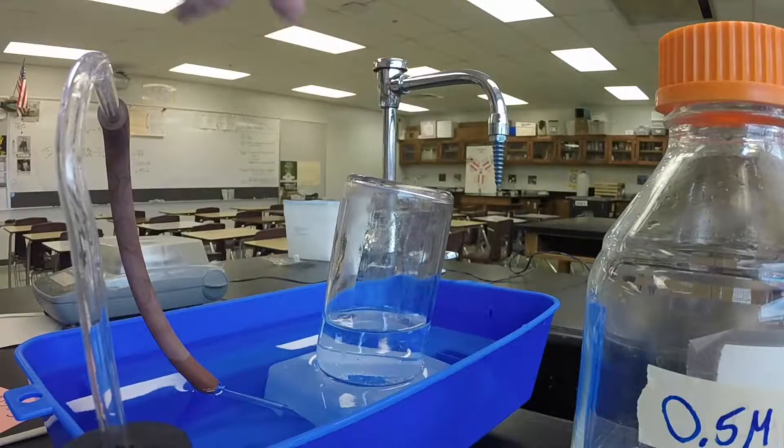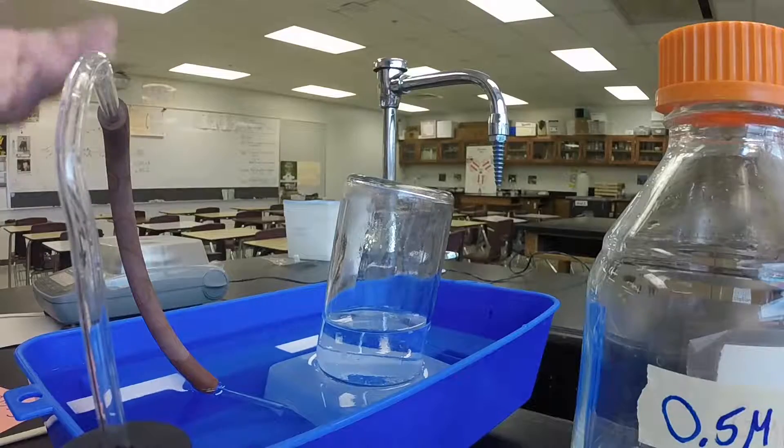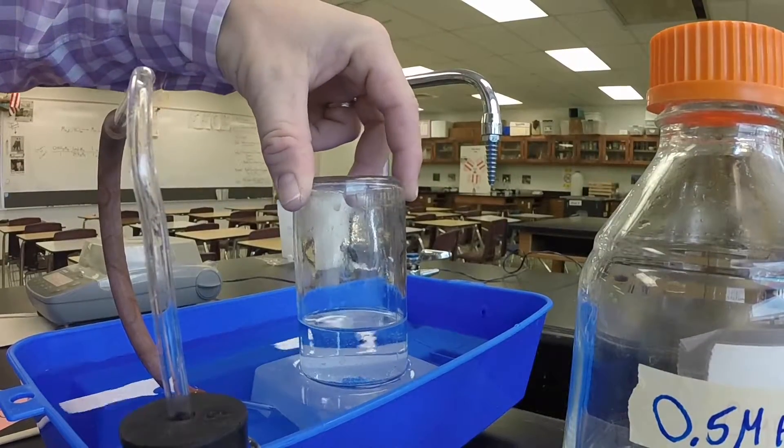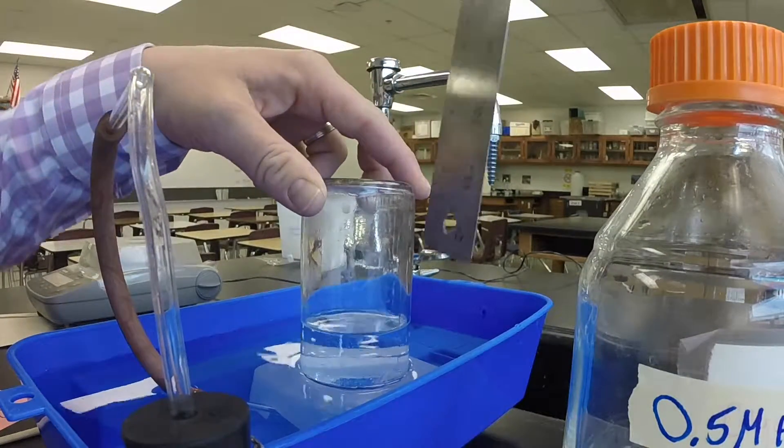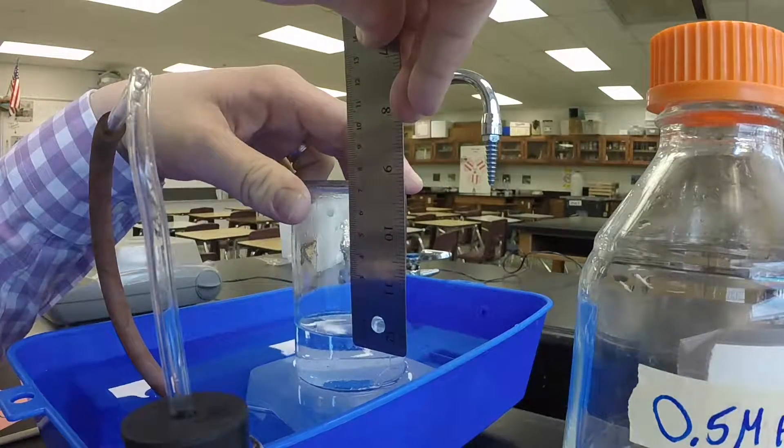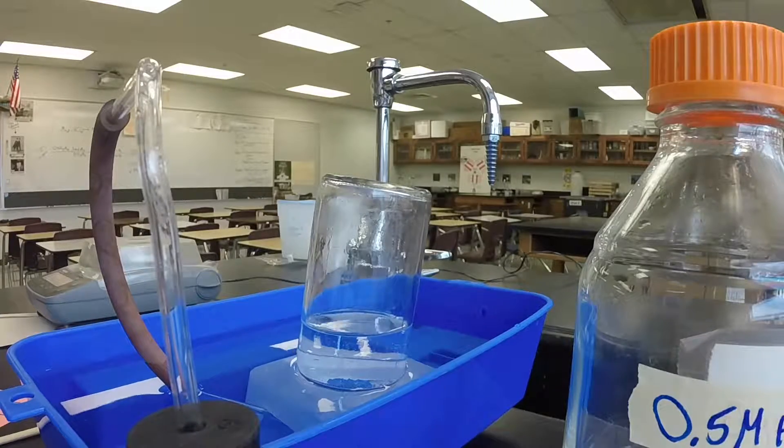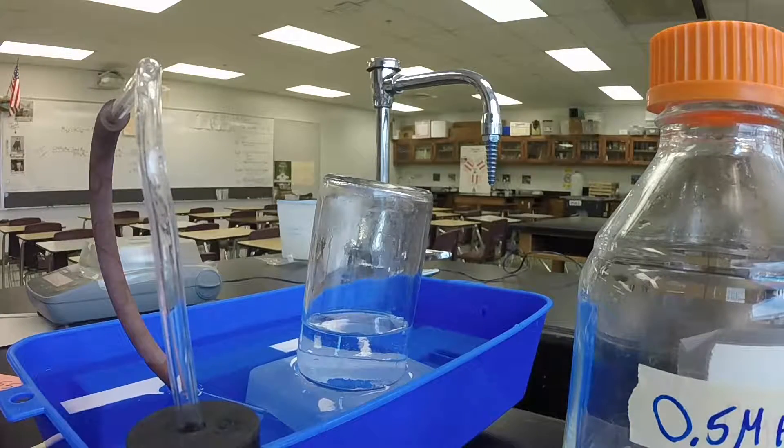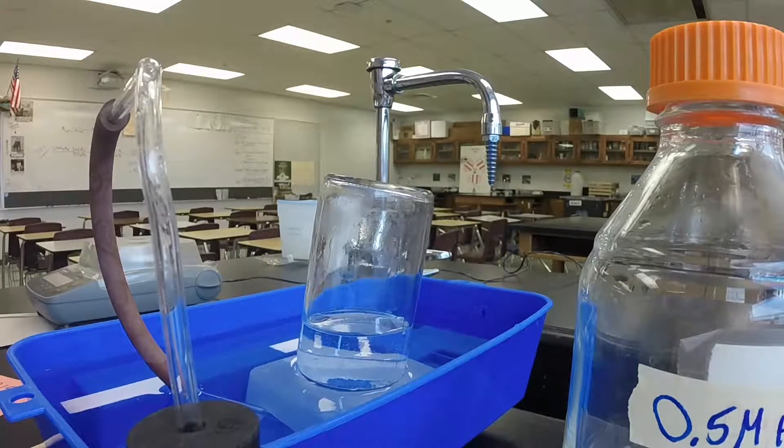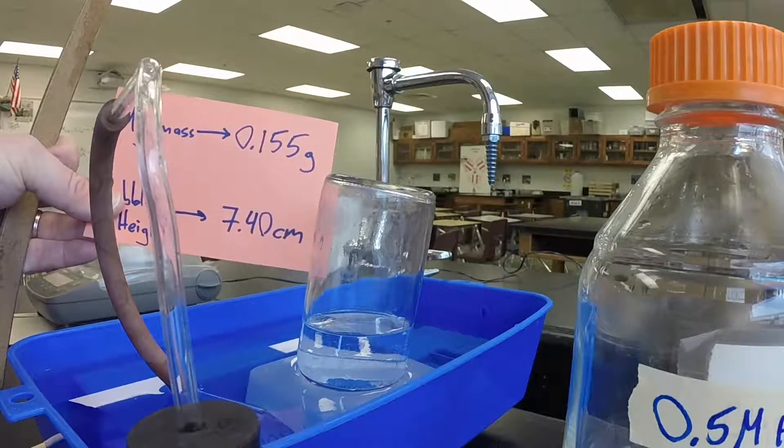That's our hydrogen produced from the reaction. Now we want to see how our prediction matches up with what we actually produced in the reaction. So I'm going to measure this. And I'm going to measure the approximate height of the bubbles in centimeters. Let me get down here at eye level. And it looks like we have about 7.4 centimeters. So the bubble height is 7.40 centimeters. There you go. So we'll use that in just a moment to calculate the volume of the bubbles.